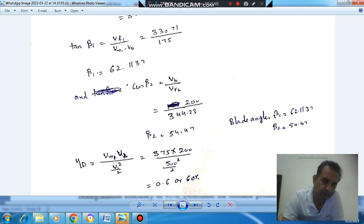And diagram efficiency, we take mass 1 kg, which means the power output is blade velocity × VW. And this is your kinetic energy per unit mass flow is V1²/2. So efficiency, diagram efficiency is 60%.